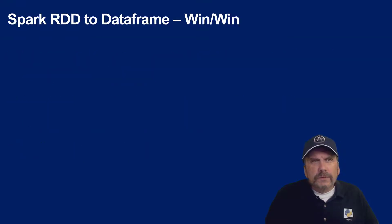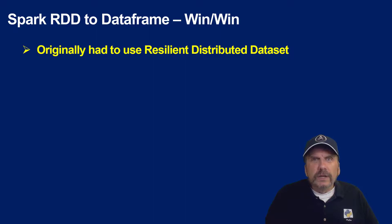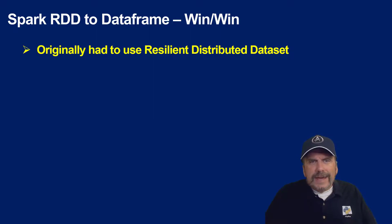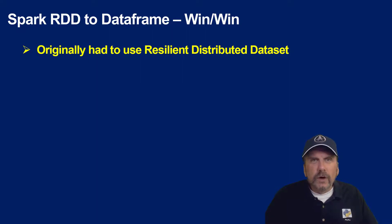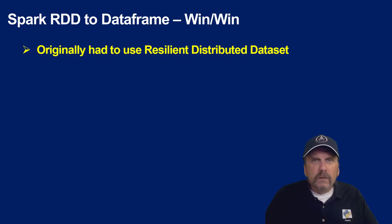I want to talk briefly about Spark resilient distributed data sets and the move towards data frames. Originally RDDs — resilient distributed data sets — were the only way you could work with Spark. At the lowest level of work going on, Spark has this rock solid block of data called the RDD. The RDD is indestructible — that's its whole purpose. No matter what you do, you can turn machines off and crash them, and you'll be able to bring it back and not lose the data sets. Extremely robust, very powerful, and never crashes because the idea is you might have hardware that could fail running many machines.